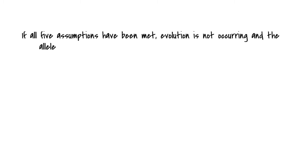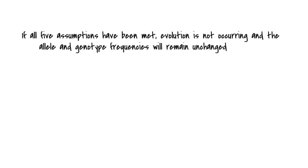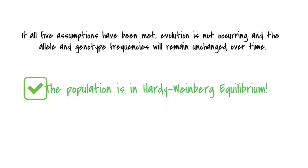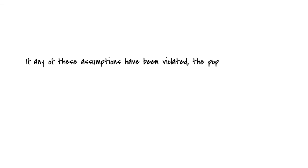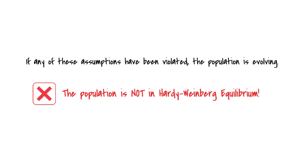If all five assumptions have been met, evolution is not occurring, and the allele and genotype frequencies will remain unchanged over time. Thus, the population is in Hardy-Weinberg Equilibrium. If any of these assumptions have been violated, the population is evolving, and thus is not in Hardy-Weinberg Equilibrium.